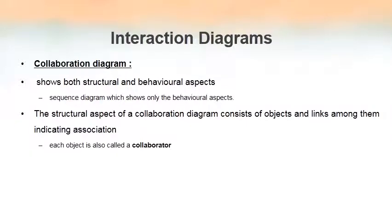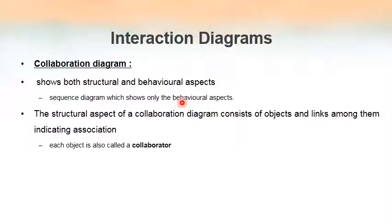Now we will see the second type of interaction diagram: the collaboration diagram. In the case of a sequence diagram, it represents only the behavioral aspect. But in the case of a collaboration diagram, it represents both structural as well as behavioral aspects. To represent the structural aspect, we draw objects and links among them indicating the association — including multiplicity or type of association. In a collaboration diagram, each object is also called a collaborator.